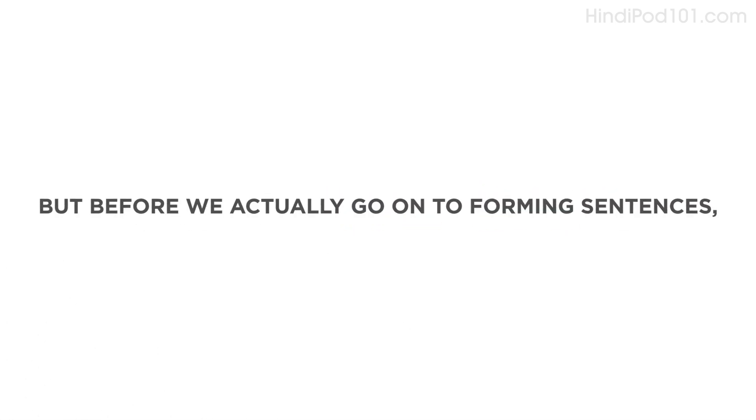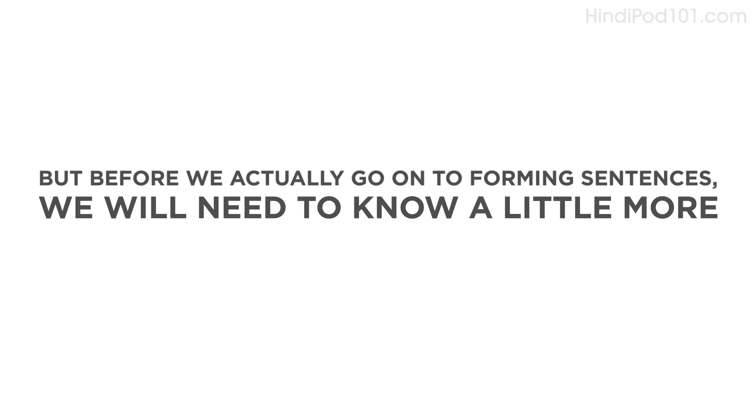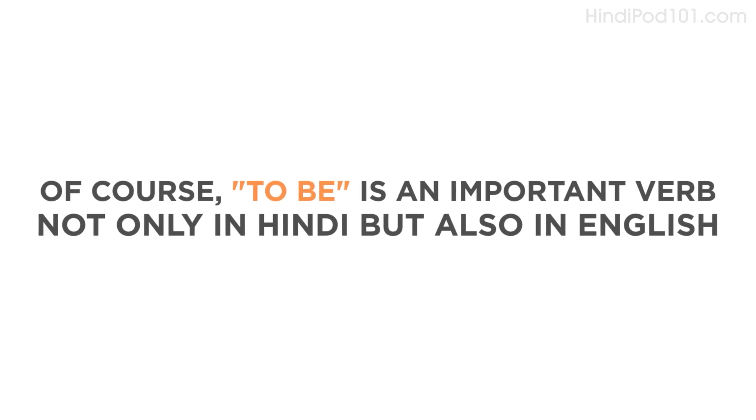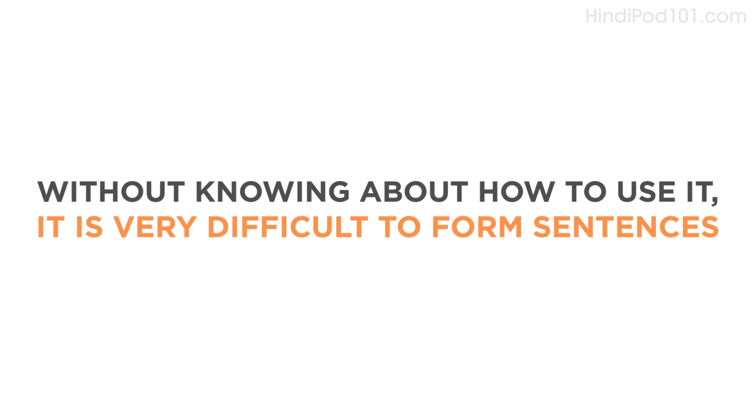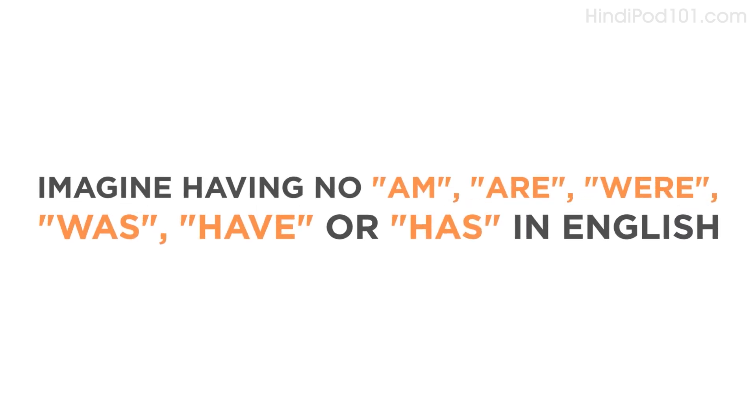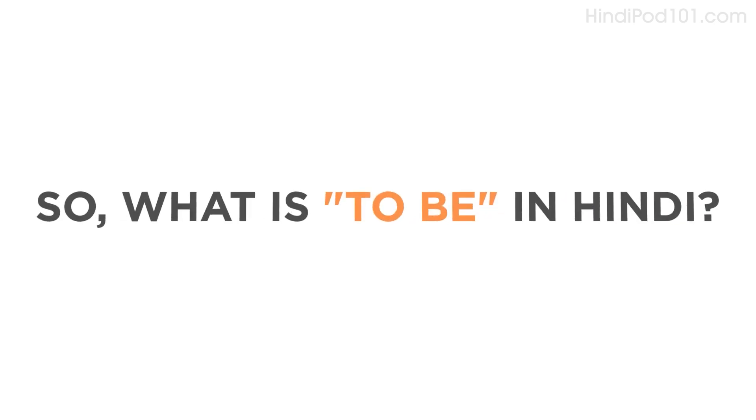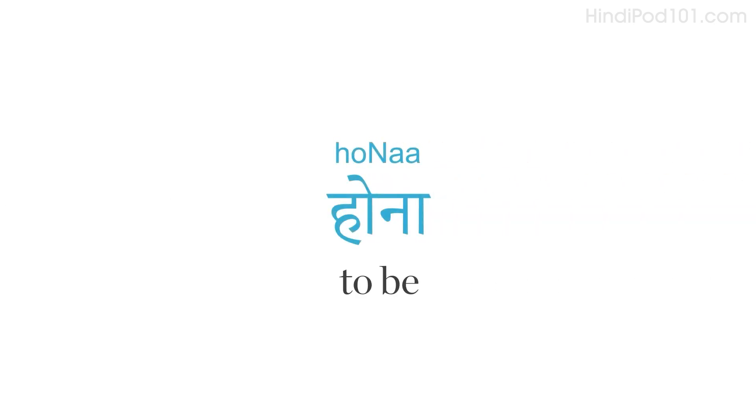Before we actually go on forming sentences, we will need to know a little more about the various forms of the verb 'to be'. Of course, 'to be' is an important verb not only in Hindi but also in English. Without knowing about how to use it, it's very difficult to form sentences. Imagine having no 'am', 'are', 'were', 'was', 'have' or 'has' in English. There would be no sentences. So, what is 'to be' in Hindi? It is 'hona'.